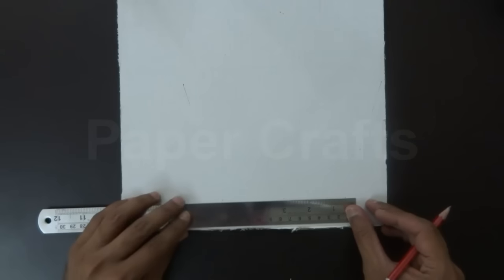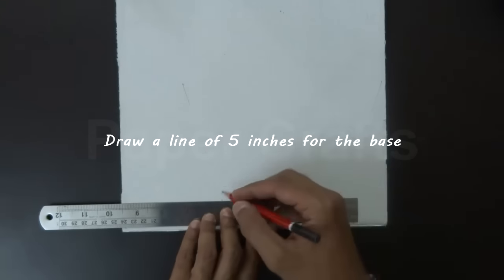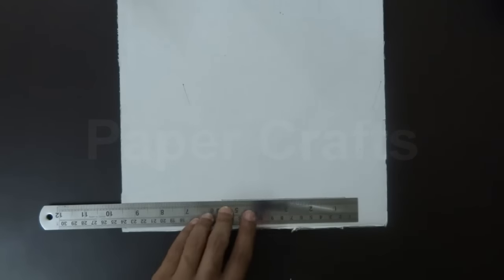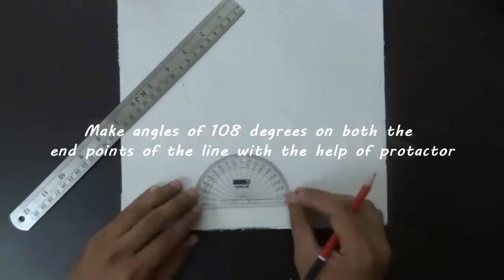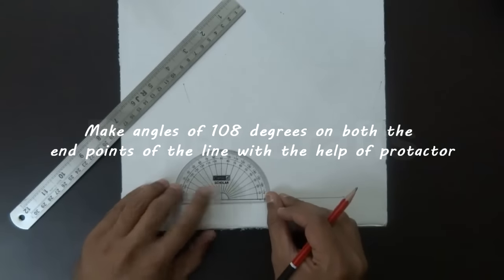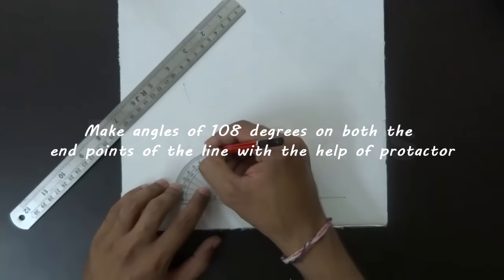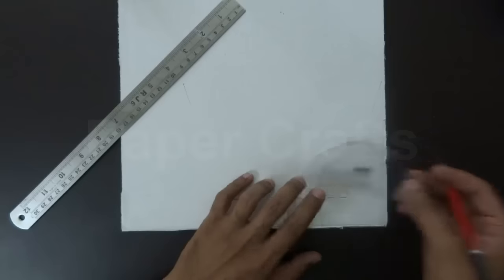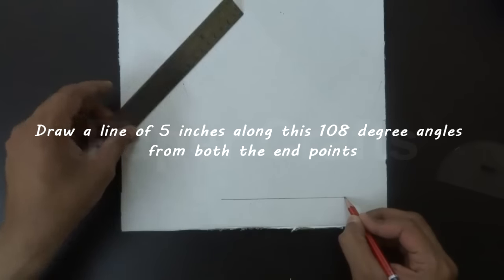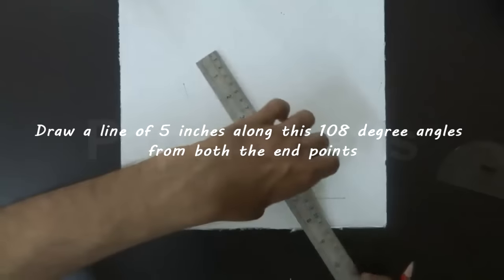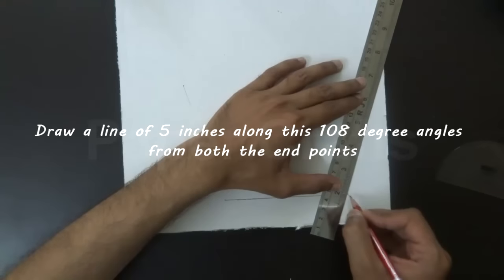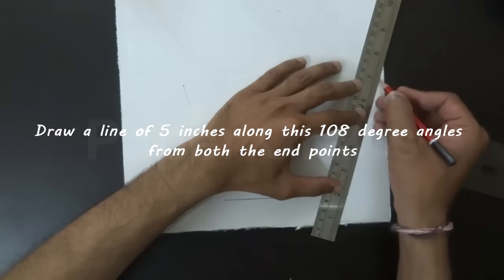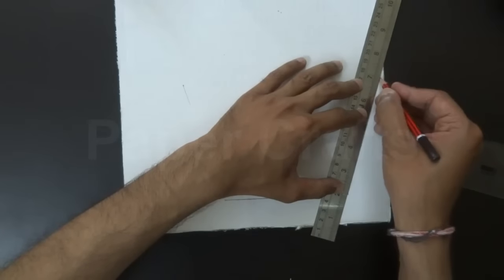First of all draw a line of 5 inches. Now take a protractor and mark the points of 108 degrees on both the end points. Now make lines of 5 inches each connecting this point and this point.